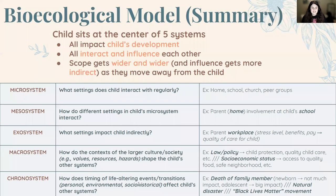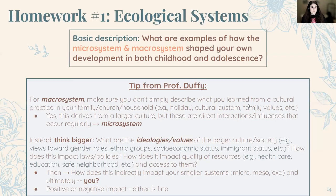In summary, don't be overwhelmed. The child sits at the center of five systems — all impacting the child's development and all interacting and influencing each other. The scope gets wider and more indirect as it moves away from the child. For homework number one, you're going to reflect on your own experience growing up. Think of examples of how the microsystem and the macrosystem shaped your own development — one example for the macrosystem in childhood and one in adolescence, and then one example of the macrosystem in childhood and adolescence.